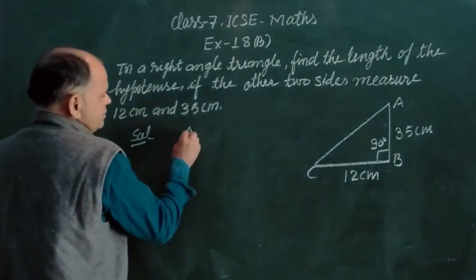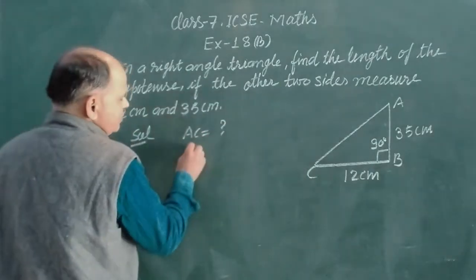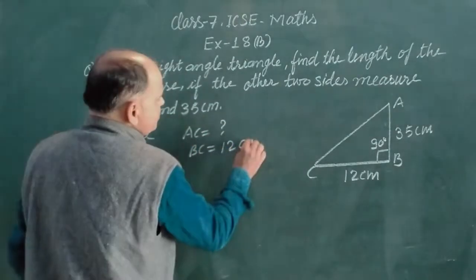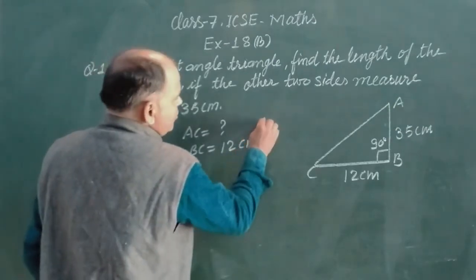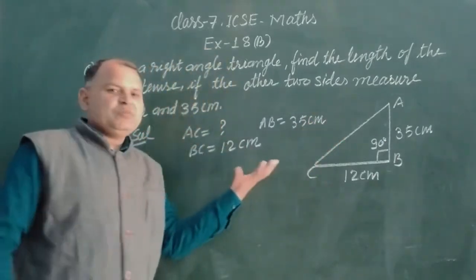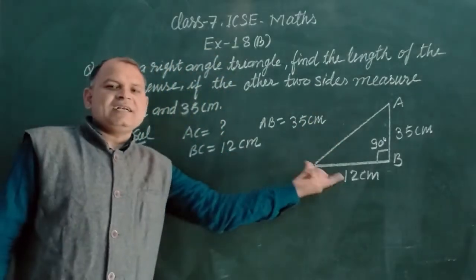So AC we find. BC is given 12 cm and AB also given as 35 cm. So we use Pythagoras theorem in this right triangle.